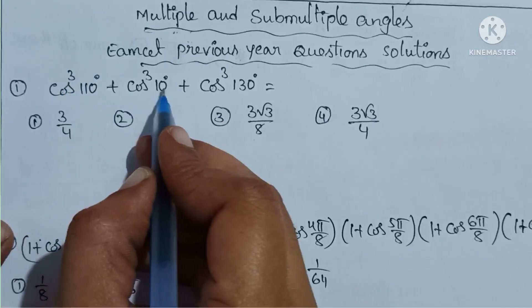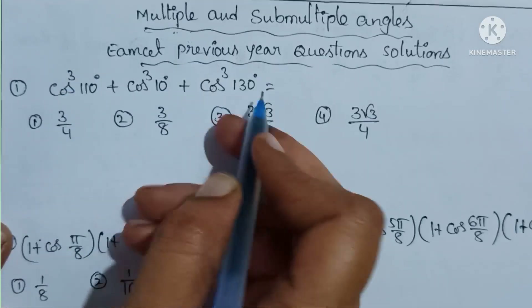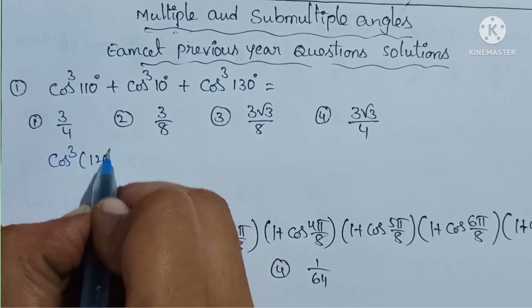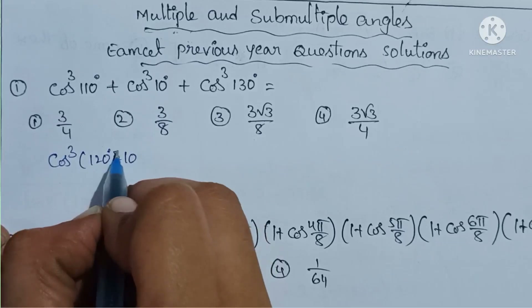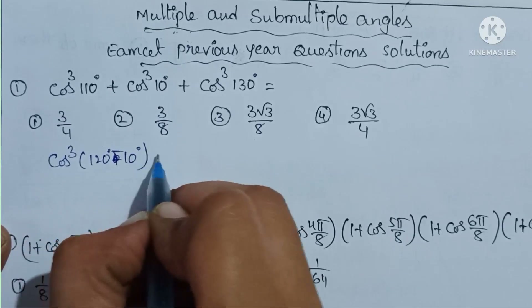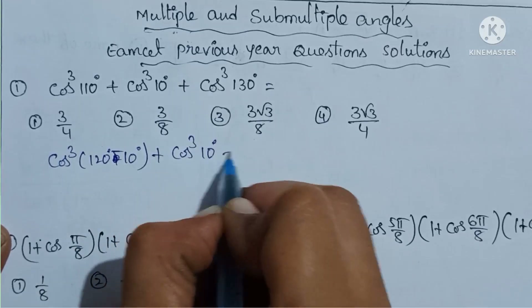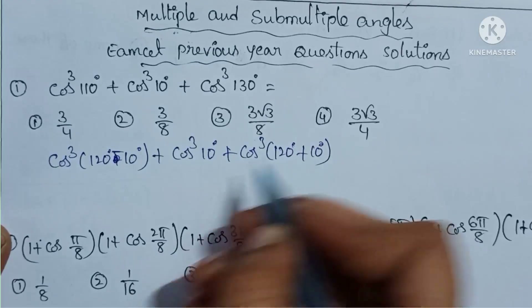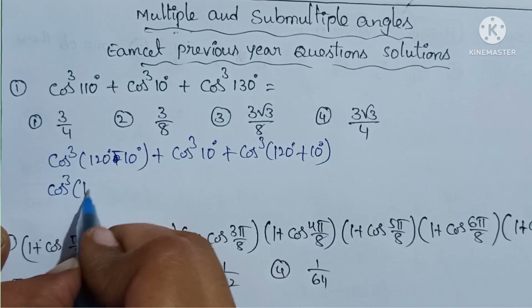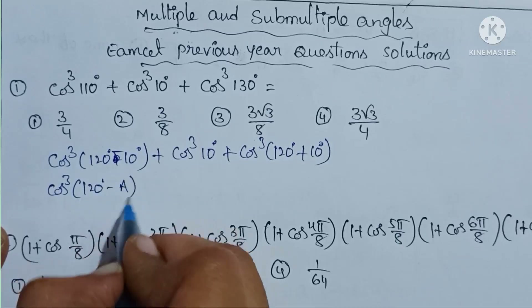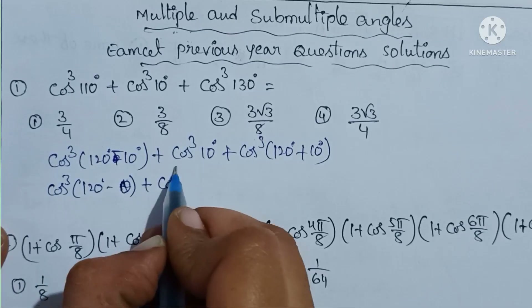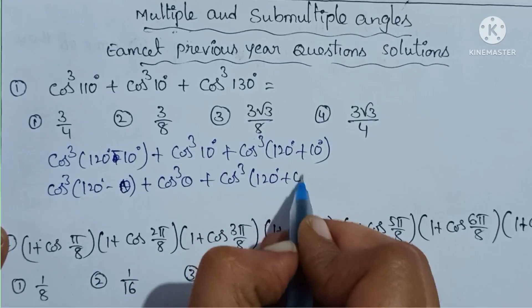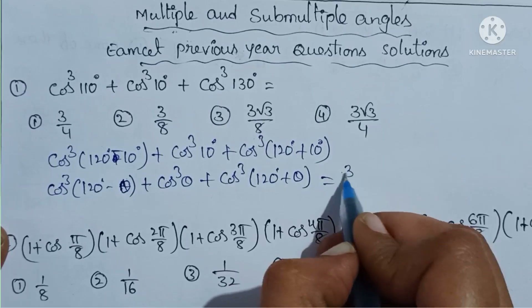The first sum: cos³(10°) + cos³(130°) + cos³(250°). We can write this as cos³(10°) + cos³(120° - 10°) + cos³(120° + 10°). Using the standard formula: cos³a + cos³(120° - a) + cos³(120° + a) = (3/4)cos(3a).